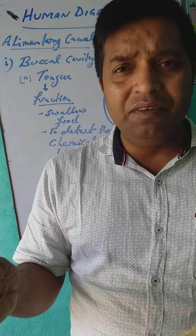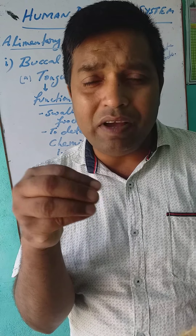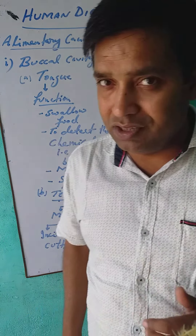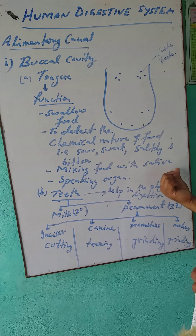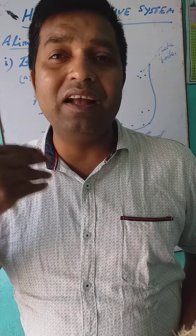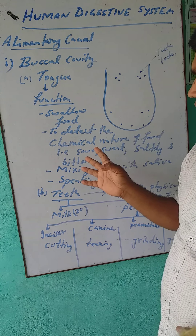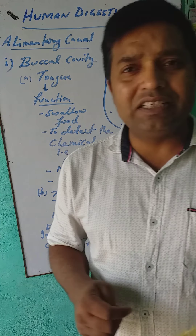When we are eating food, some liquid comes into our mouth — that liquid is called saliva. Saliva mixes with the food, and this mixing takes place with the help of the tongue. So the tongue plays a very important role in mixing food with saliva. The tongue is also a speech organ — meaningful words and sentences are formed with the help of our tongue. So the four functions of the tongue are: swallowing food, detecting chemical nature, mixing food with saliva, and speaking.